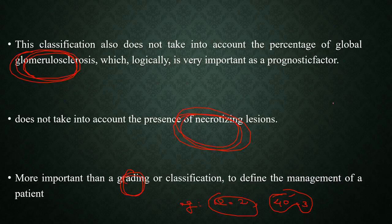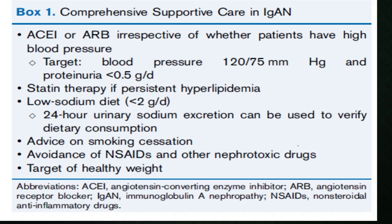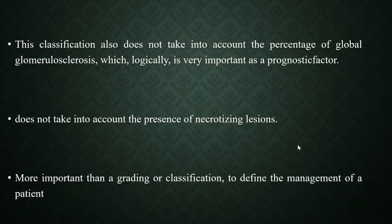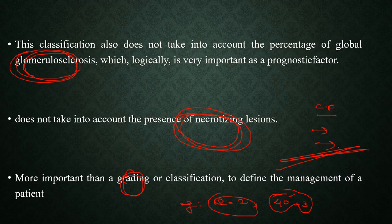This is how it helps assess prognosis. Other poor prognostic factors in the clinical picture include: proteinuria more than one gram, hypertension, obesity, and smoking — all poor prognostic markers that need to be correlated with the MEST-C findings. The rest will be covered in another video. This is all regarding the MEST-C score.